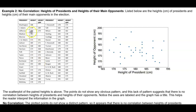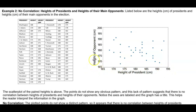They're going to graph the ordered pairs that they can graph. When they graph these on a scatter plot, you can see that the heights of the president are on the x-axis, ranging from 165 to 195. And then the heights of their opponent are on the y-axis.